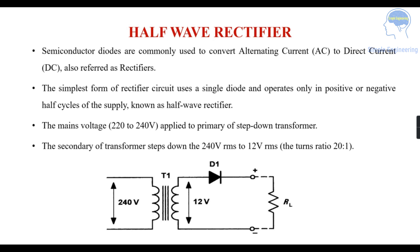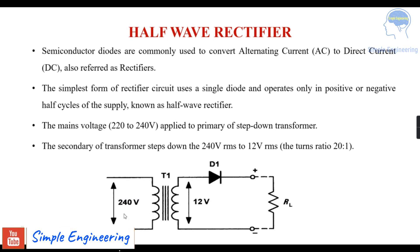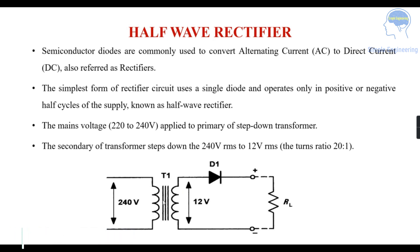In the input, we are giving the mains voltage — that is 220 to 240 volts — applied to the primary of a step-down transformer. The transformer steps down the 240 volts to 12 volts in the secondary. So in the secondary of the transformer you get 12 volts, and a diode and a load resistance are connected.